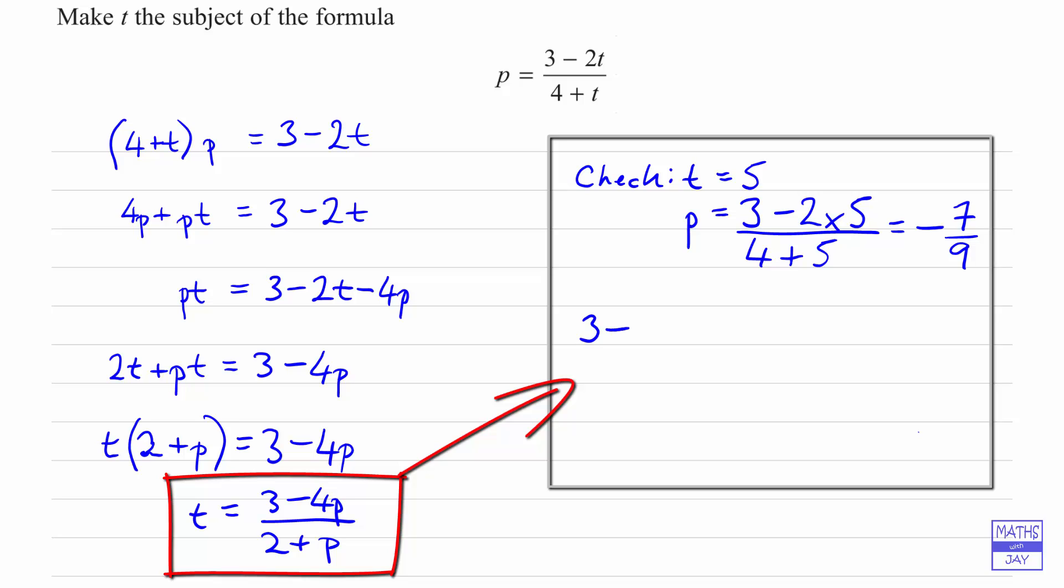So we're saying that 3 minus 4 times p, so 3 minus 4 times minus 7 ninths, that's what we've got as our numerator, and our denominator is 2 plus p, so 2 plus negative 7 ninths, so 2 minus 7 ninths.